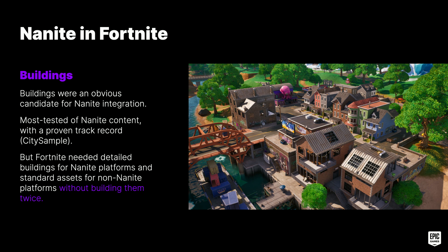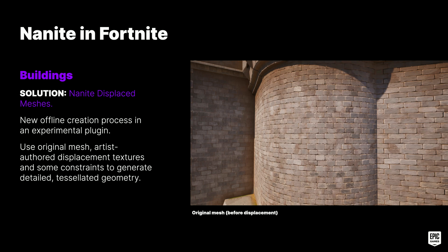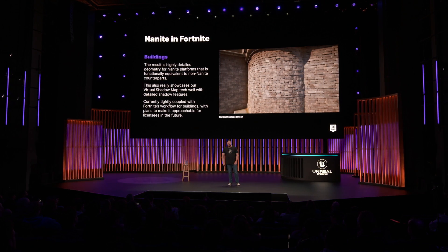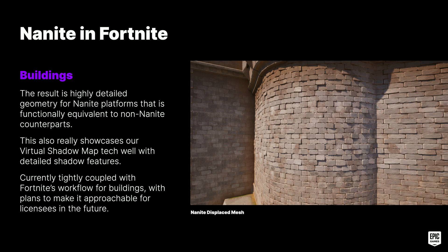The answer on the code side was Nanite displaced meshes — an ad hoc offline process created in an experimental plugin that takes a lower-poly mesh and some displacement textures and generates a high-poly tessellated Nanite mesh. The original mesh before displacement and the result after are clearly different. These displaced meshes are functionally equivalent to their non-Nanite counterparts but add noticeable detail to the structure. These details really help showcase our VSM tech as they drastically improve self-shadowing and silhouettes. While this tech is currently tightly integrated to Fortnite's building workflow, we have plans to develop it further to make it more approachable for licensees.